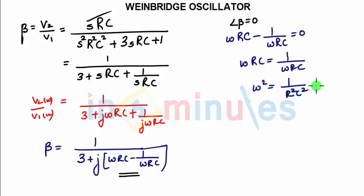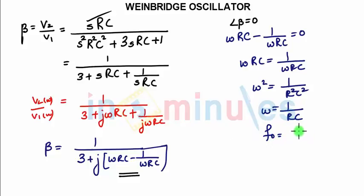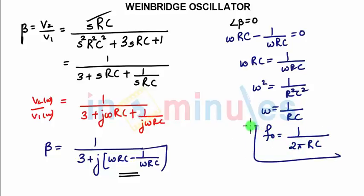So ω = 1/(R·C). Since ω = 2πf₀, we get f₀ = 1/(2π·R·C). This is the frequency of oscillation for the Wien bridge oscillator.